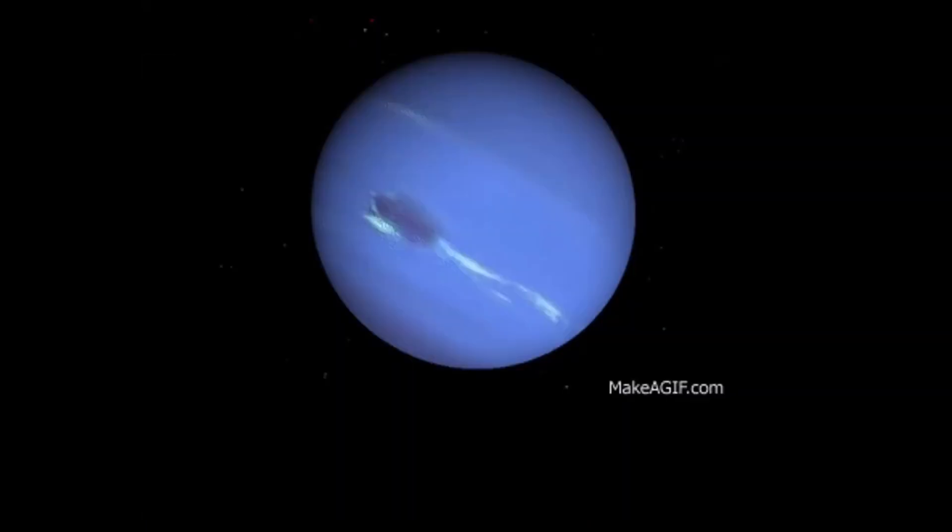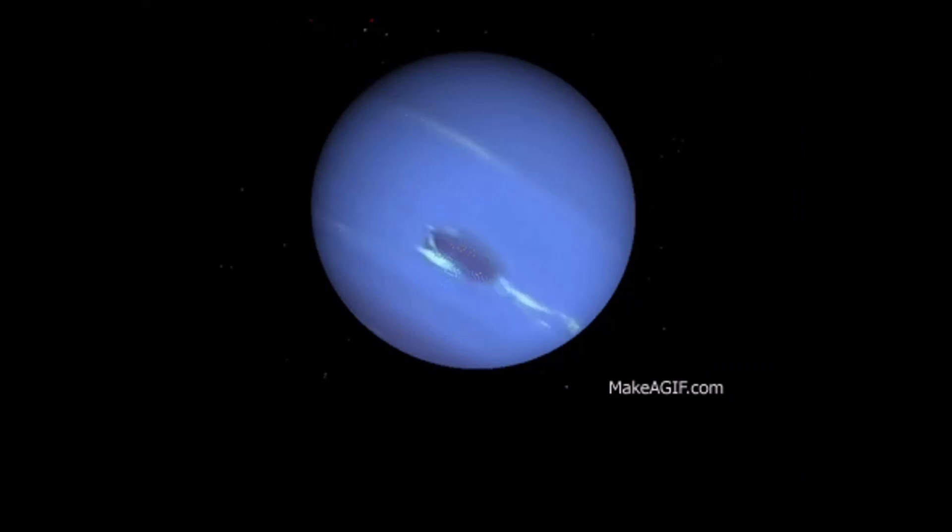Now the next planet is Neptune. And you know it is the farthest planet. Or you can say it is the last planet in the solar family. And it is the coldest because it is the farthest from the sun.